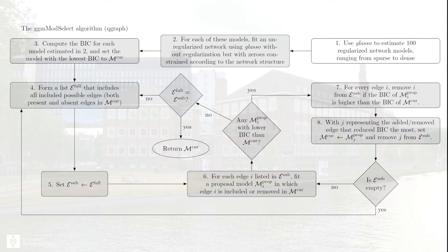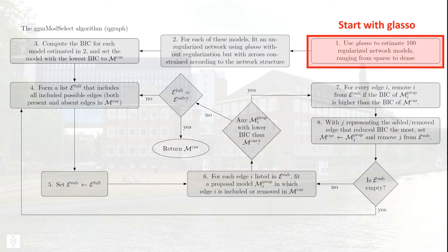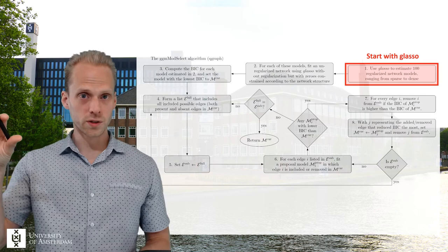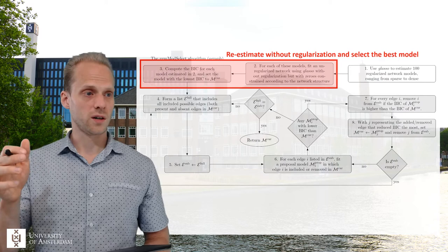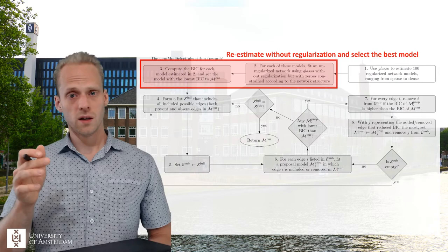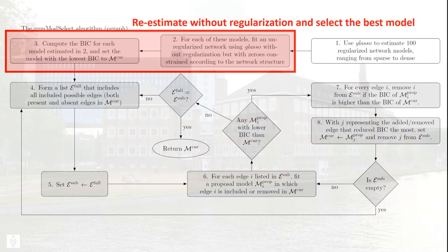The trick in ggmmodselect is that we actually start with GLASSO. We run a GLASSO to estimate 100 models, just like we do in EBICglasso. But then in EBICglasso we use those network estimates to obtain the EBIC. In ggmmodselect we don't do that — instead, we refit the model for each of these obtained networks without regularization. We use GLASSO to fit the structure, but we don't use the regularized parameters anymore. We obtain new parameters with maximum likelihood estimation, so we no longer have biased estimates of the parameters. We only use GLASSO for structure but not for the parameters themselves — and that turns out to be a very powerful thing.